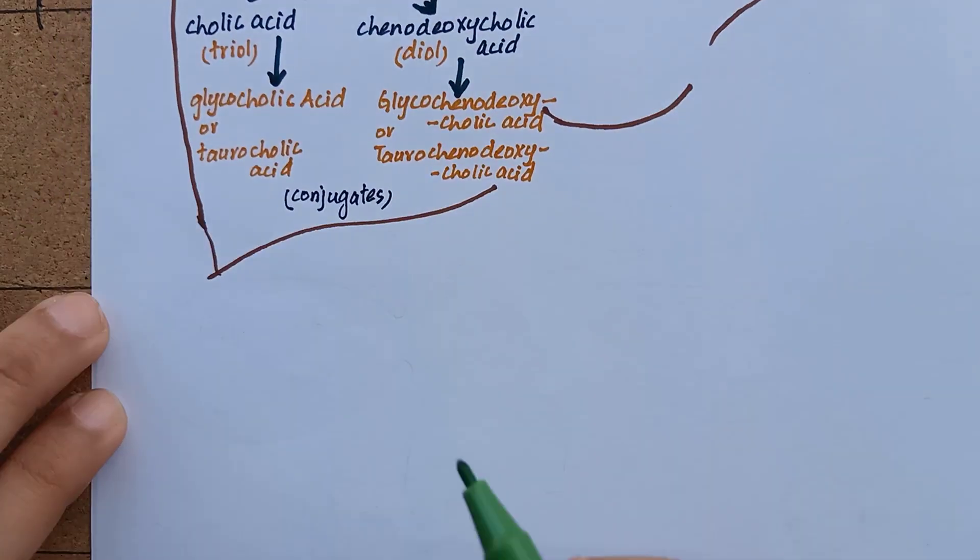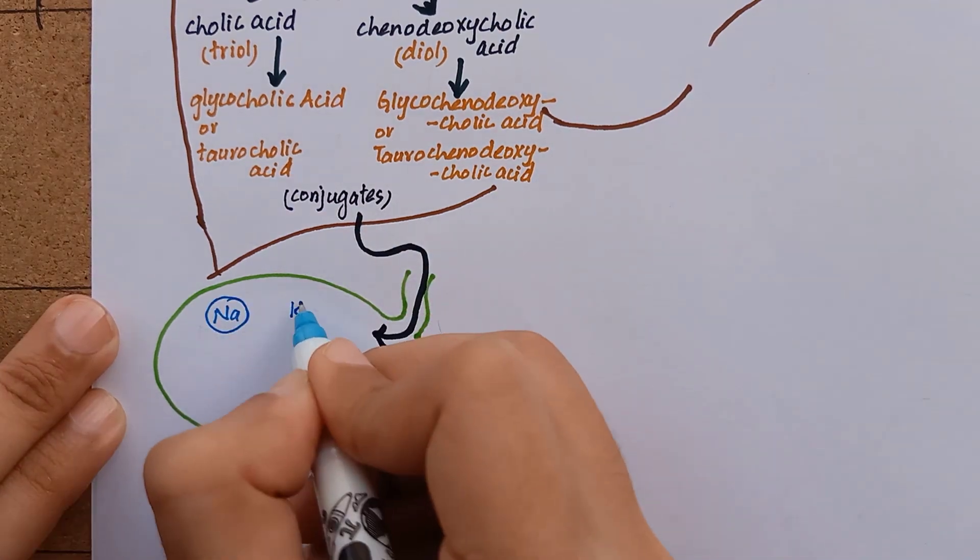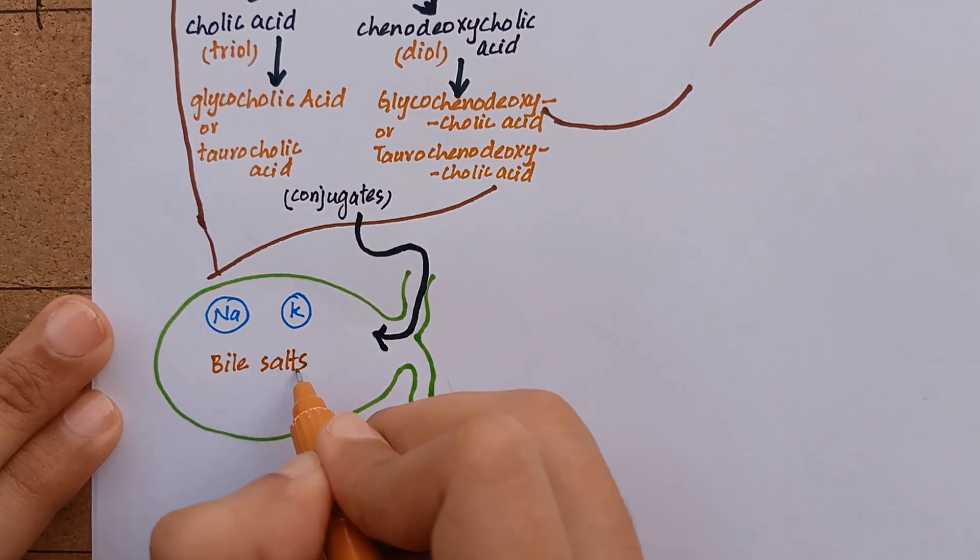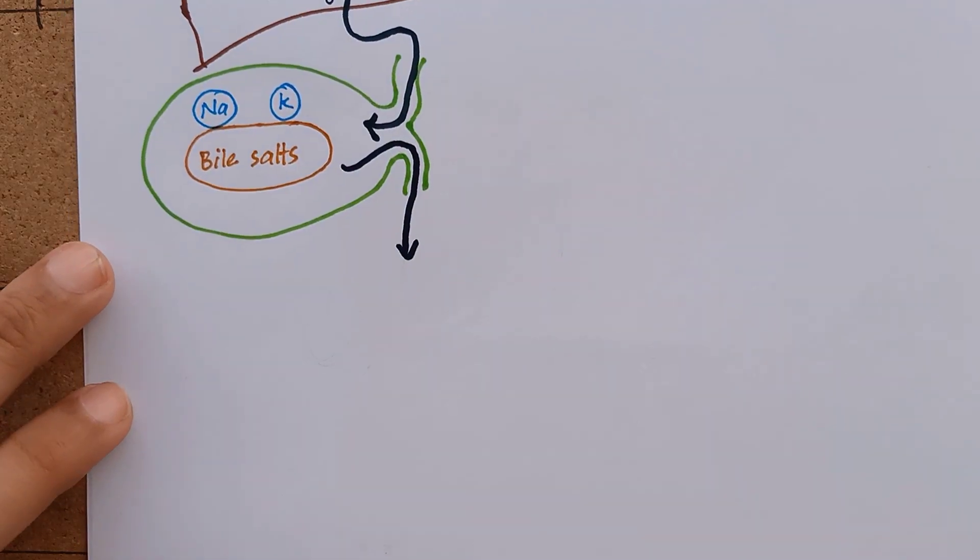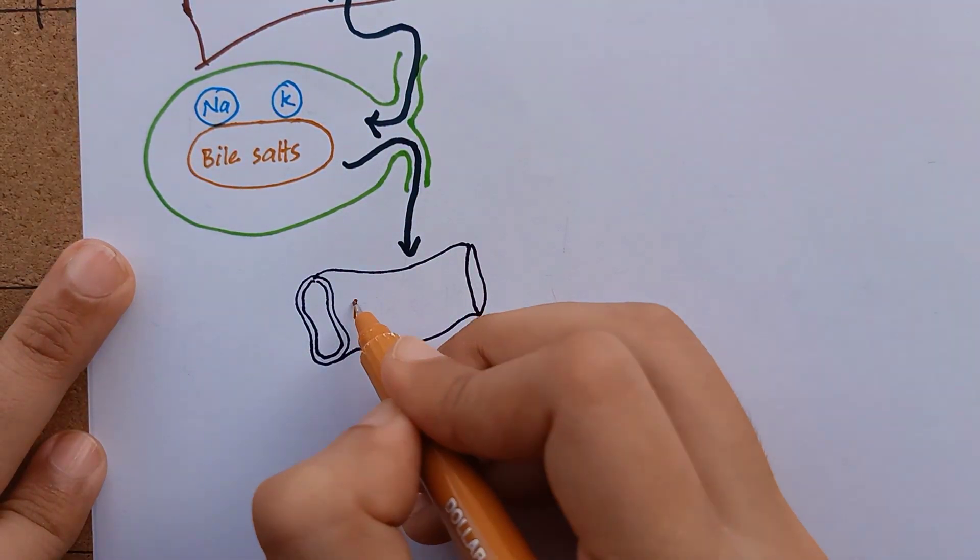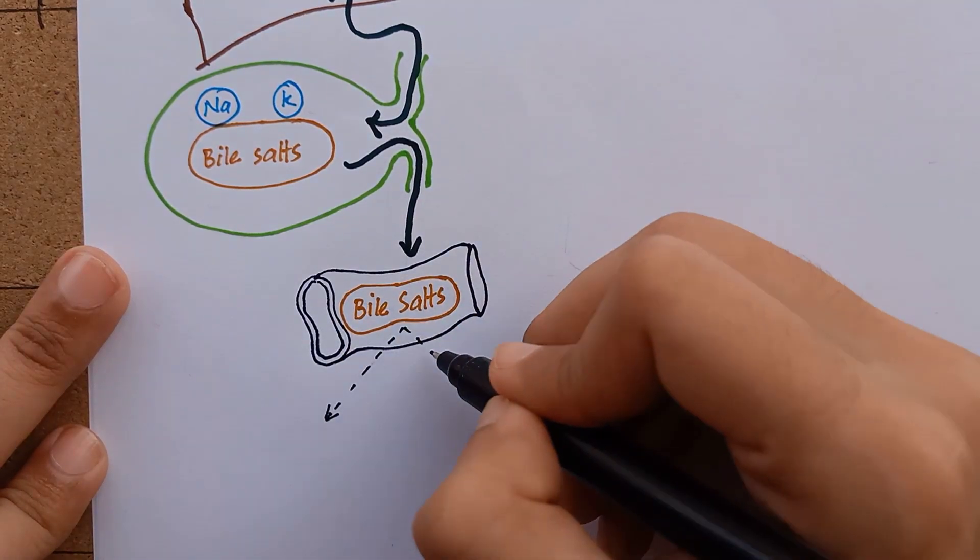These conjugated bile acids exist as sodium and potassium salts in the bile and they are called bile salts. Bile salts are more effective in their function than bile acids. They serve as an emulsifying agent in digestion and absorption of fats and fat-soluble vitamins in the intestine.